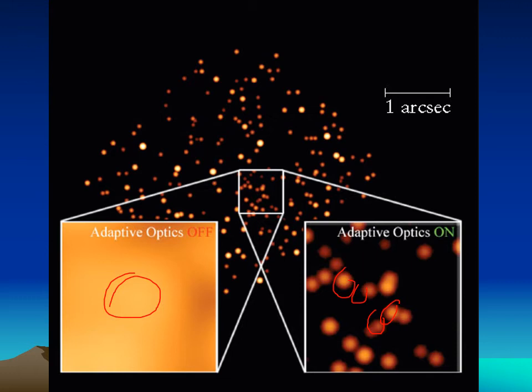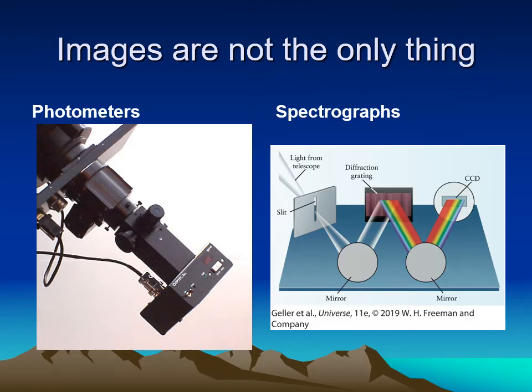In addition to images, you need instruments attached to the telescope that analyze the light. A photometer doesn't even take a picture — you point the telescope at a star and it measures the precise magnitude of that star, detecting very small variations in brightness. I've published several papers using a device almost exactly like that. My graduate research involved eclipsing binary stars, a type of variable star, measured this way.